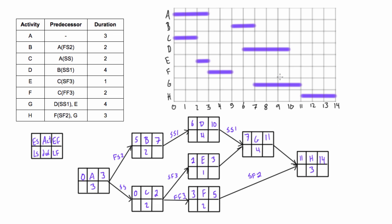Now we can compare and check if we got the same values from our Gantt chart and the early start and early finish of our PDM network diagram. A goes from zero to three - same on both. B goes from five to seven - on the Gantt chart it also goes from five to seven. Activity D goes from six to ten - and on the Gantt chart it also goes from six to ten.